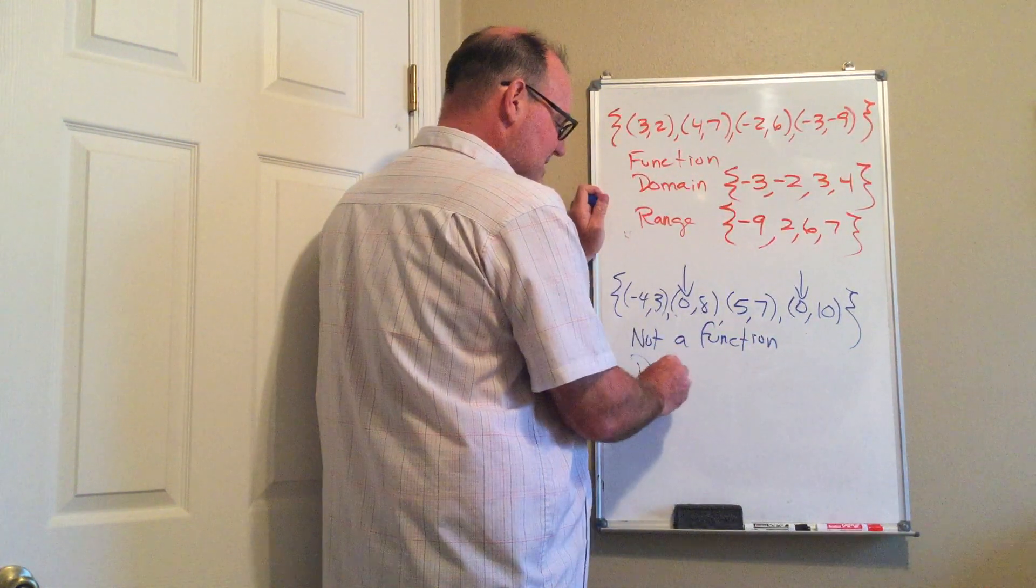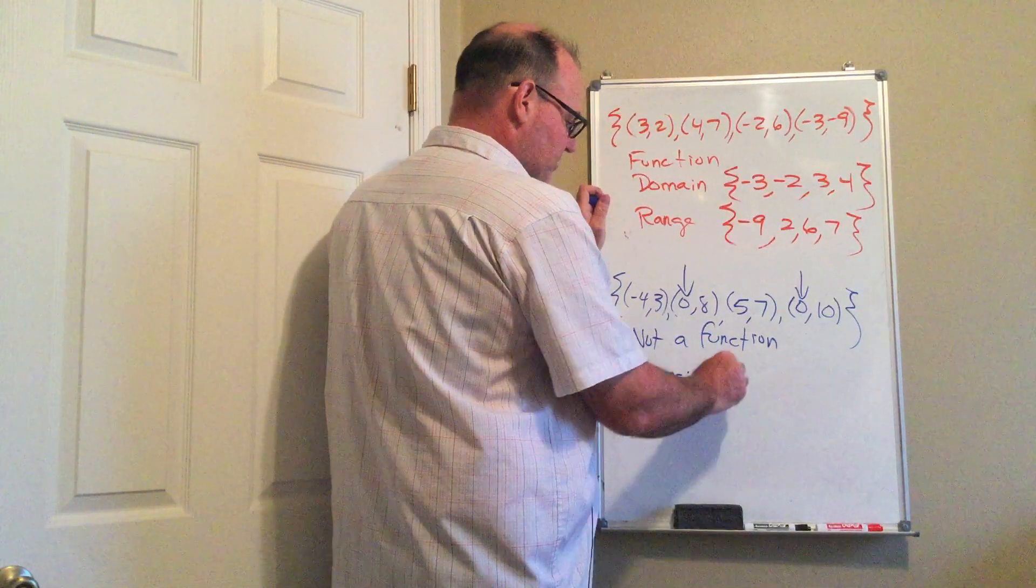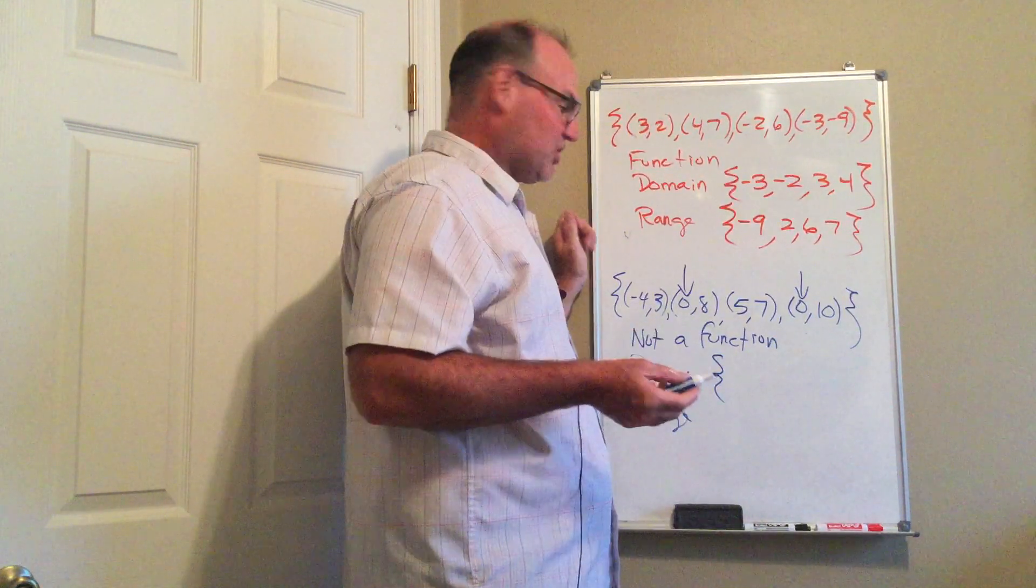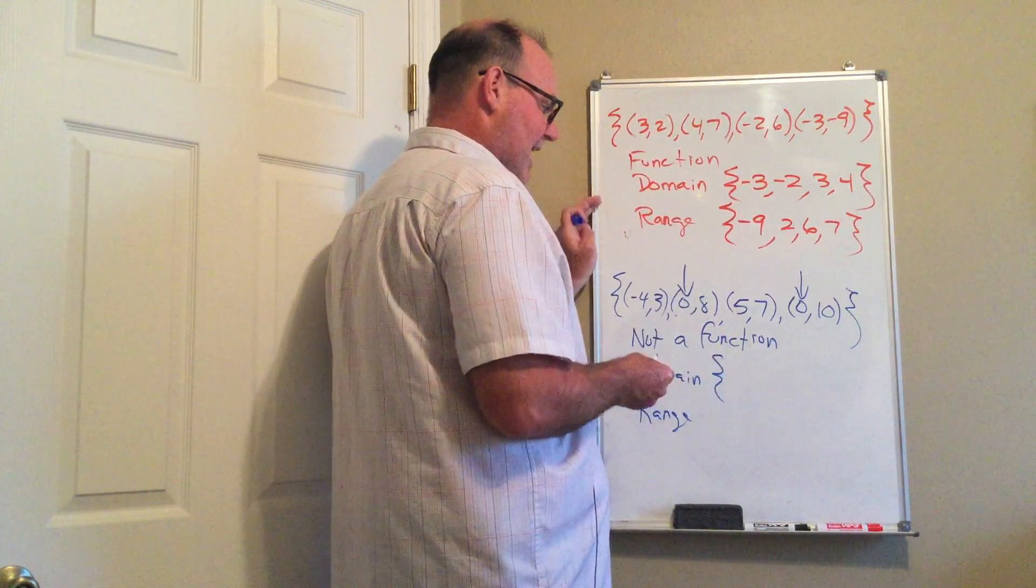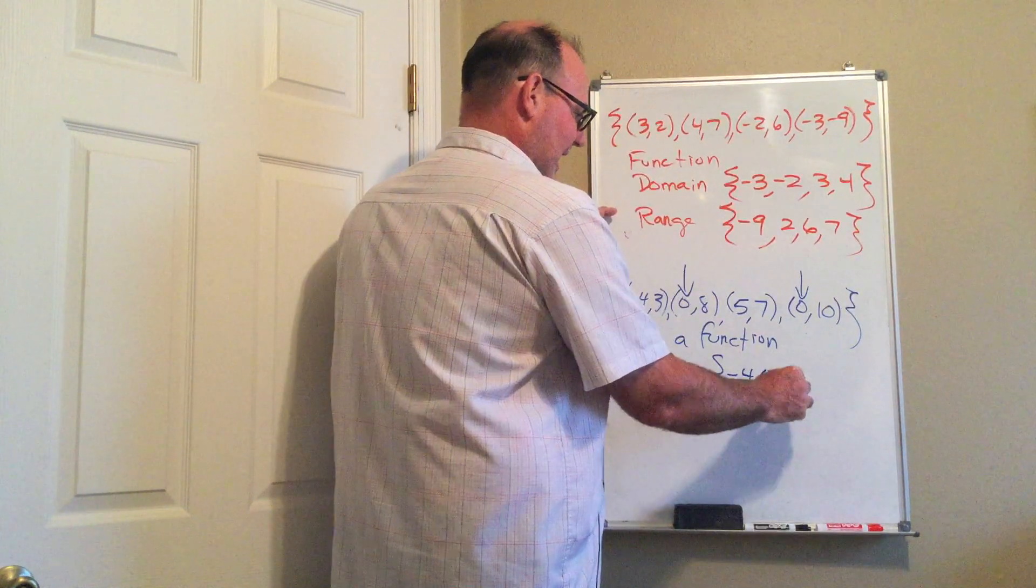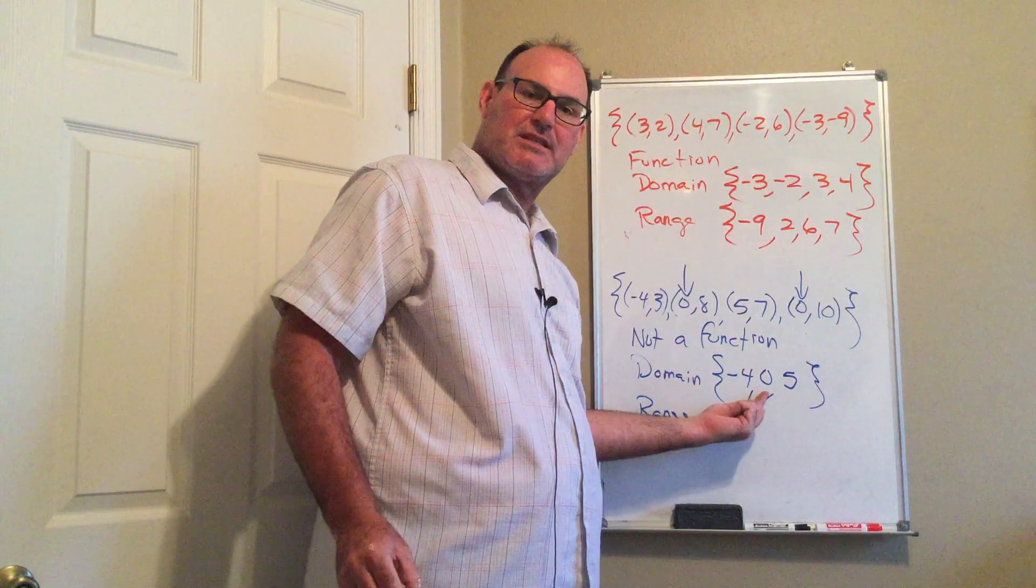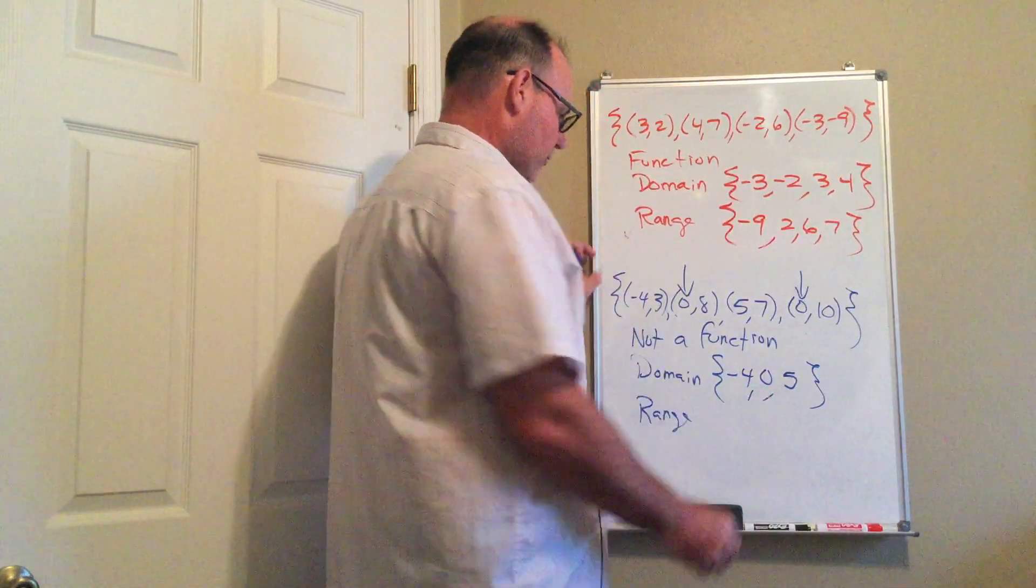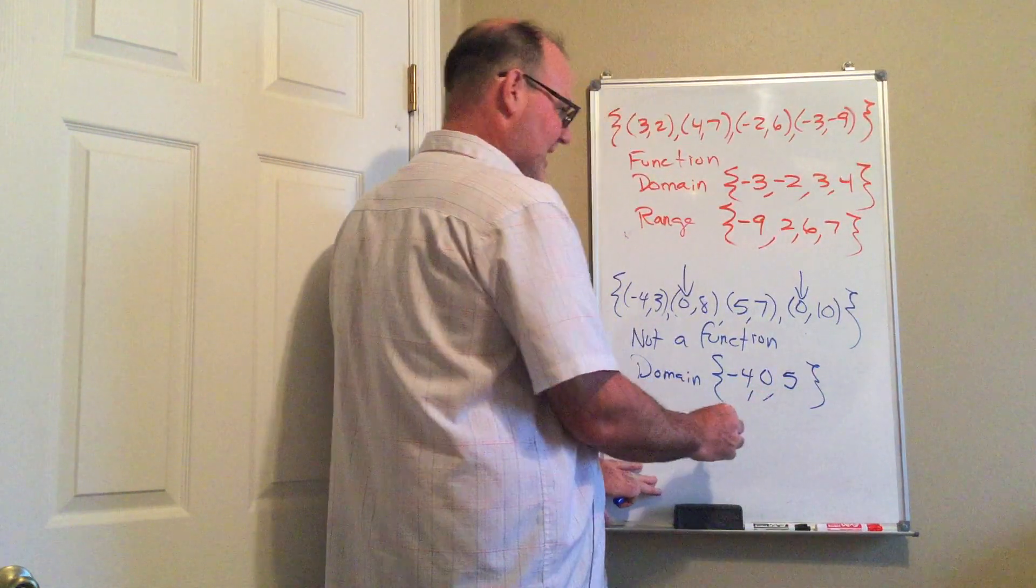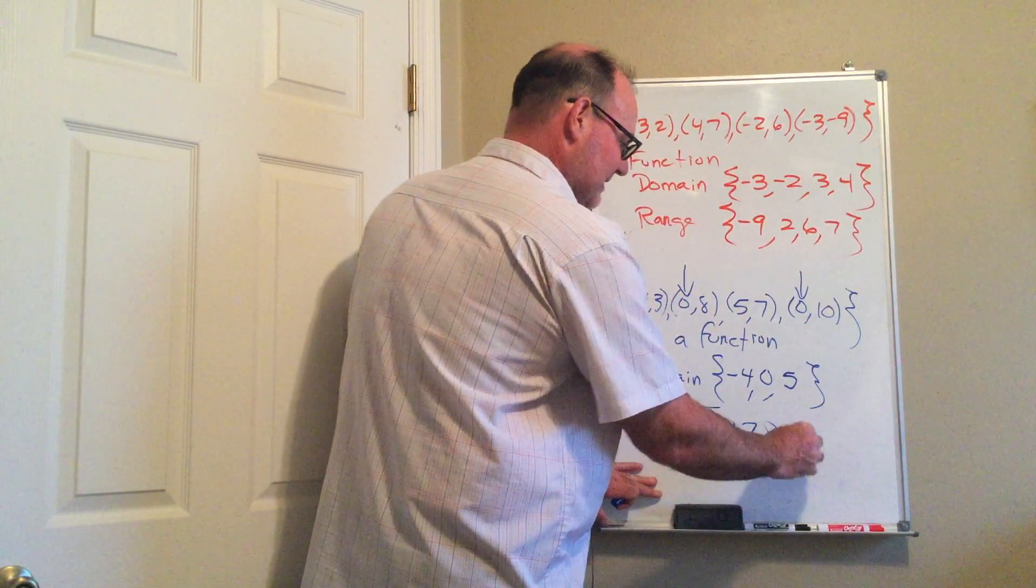Again, though, even if it's not a function, you can talk about the domain and the range. The domain of this relation is, again, the x values. So I have {-4, 0, 5}. You do not have to repeat values, so you do not have to list the 0 more than once. The range is the set {3, 7, 8, 10}.